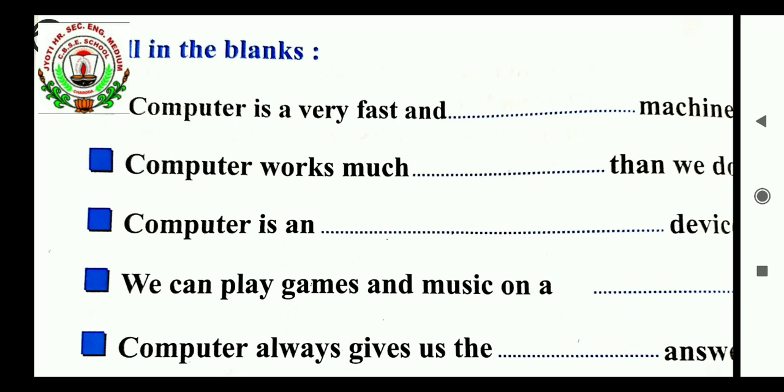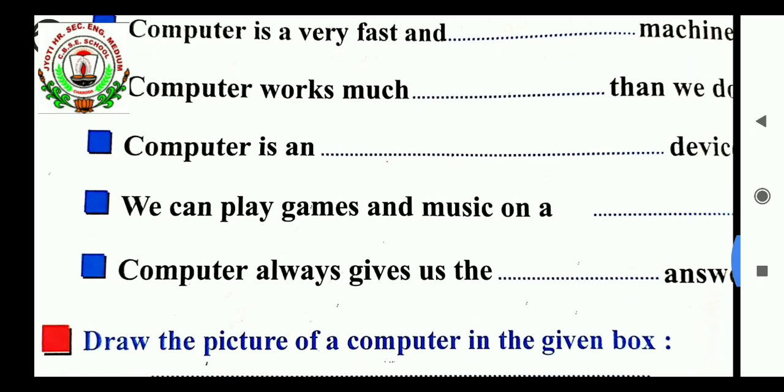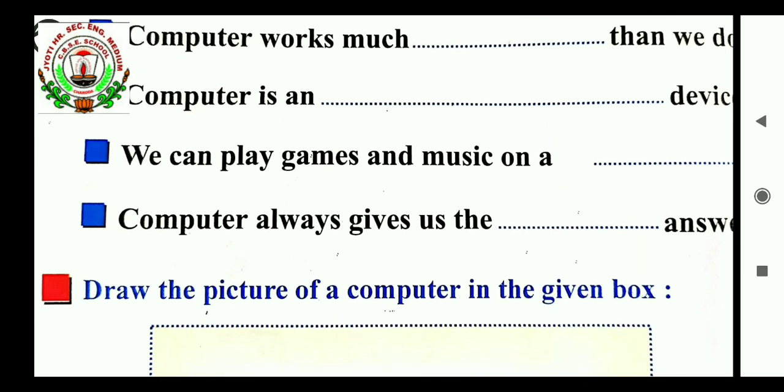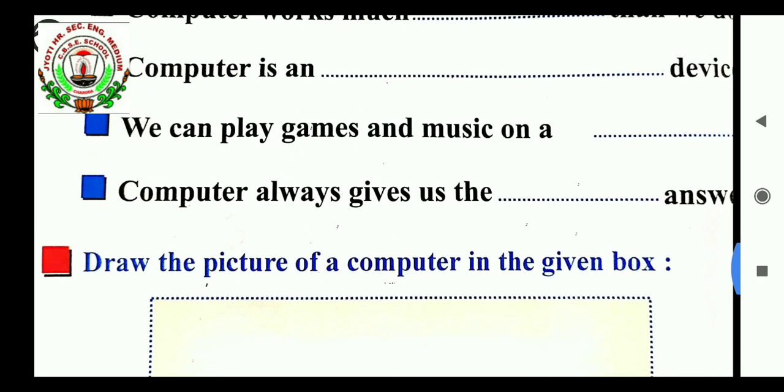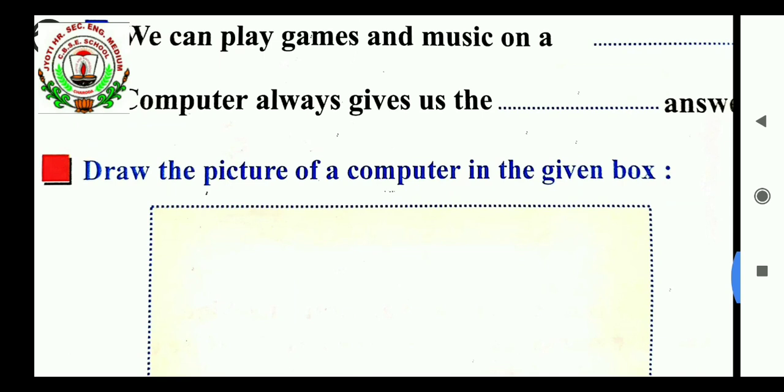Then, we can play games and music on a dash. So, where we can play games and music on a computer. Answer is, computer. Next. Computer always give us the dash answer. So, the answer is, computer always give us accurate answer. Accurate answer.